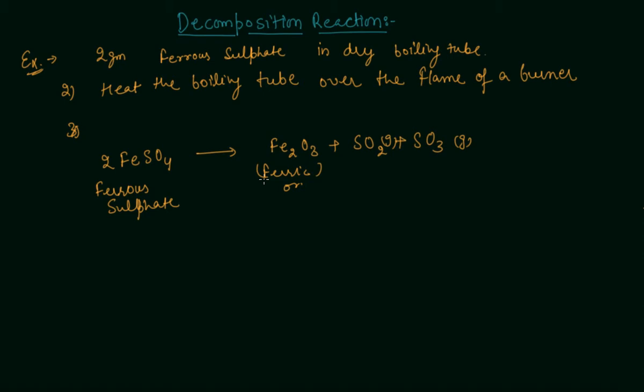Ferrous sulfate crystals lose water when heated and the color of the crystal changes. It then decomposes to ferrous oxide and sulfur dioxide and sulfur trioxide. So these are the products and this is reactant.